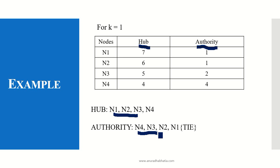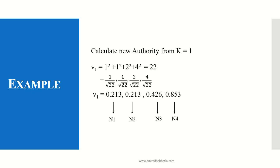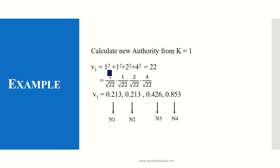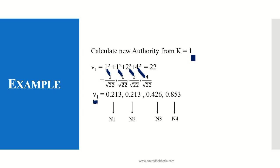The K equal to 1 values are taken as initial values for the next iteration. We calculate the new authority from K equal to 1. The authority values were 1, 1, 2, and 4. We compute 1² + 1² + 2² + 4² = 22. The new V1 is calculated as each value divided by the square root of 22: 1/√22, 1/√22, 2/√22, and 4/√22. These are the new authority values for N1, N2, N3, and N4 at K equal to 1.